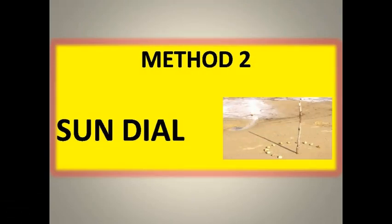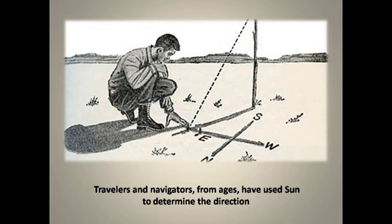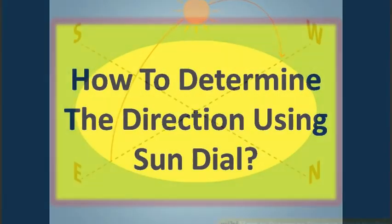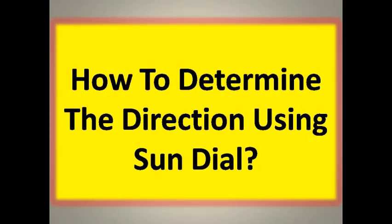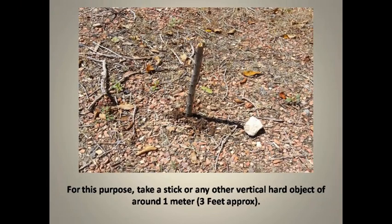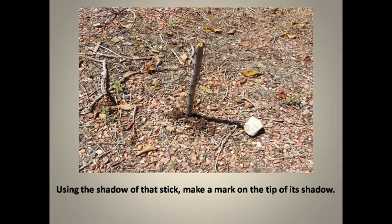The second method is the sundial. Travelers and navigators from ages have used the sun to determine direction, simply by knowing the formula that the sun rises from the east and sets in the west. To determine direction using the sundial, take a stick or any other vertical hard object of around 1 meter and place it vertically on the ground, which is properly leveled, around 12 pm. Using the shadow of the stick, make a mark on the tip of its shadow.